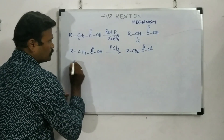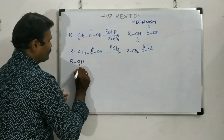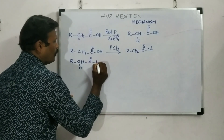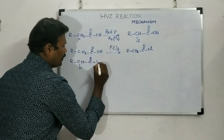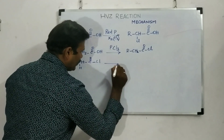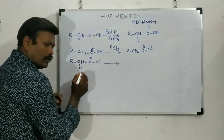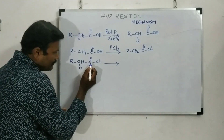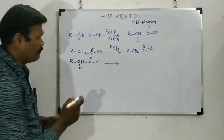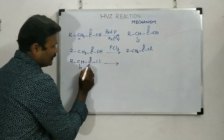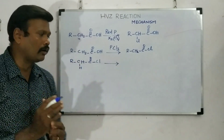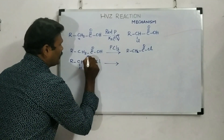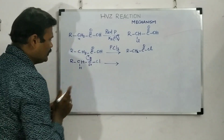So now we have RCH₂-C(=O)Cl as our intermediate. Look at this carbon — the carbonyl carbon is highly electropositive. Why? Because it is attached to oxygen on one side and chlorine on the other; both are highly electronegative. They pull electron density away, giving the carbonyl carbon a slight positive charge.